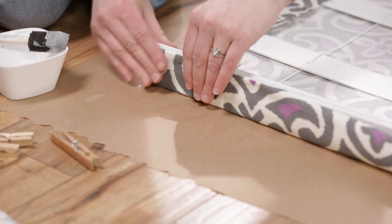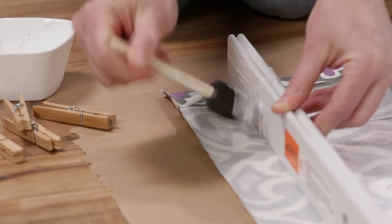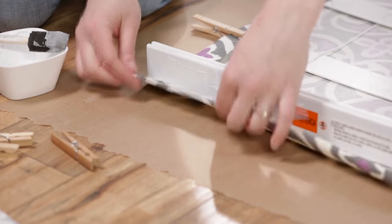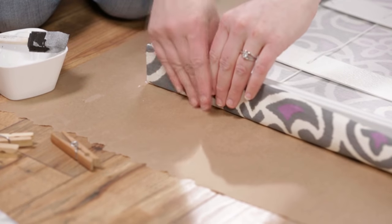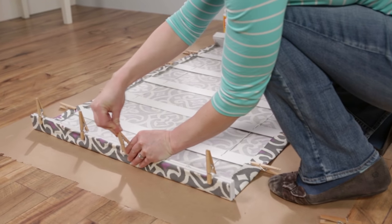Roll the edge of the fabric over so you get a clean edge. Glue into place, wrap the fabric around the bottom bar, and clamp with clothespins.